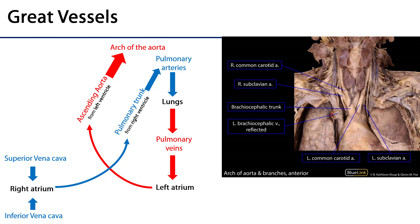Here are stumps from the left brachiocephalic vein. This vein would have crossed the superior mediastinum, covering over these branches of the arch of the aorta. So the two brachiocephalic veins come together to feed into the superior vena cava.